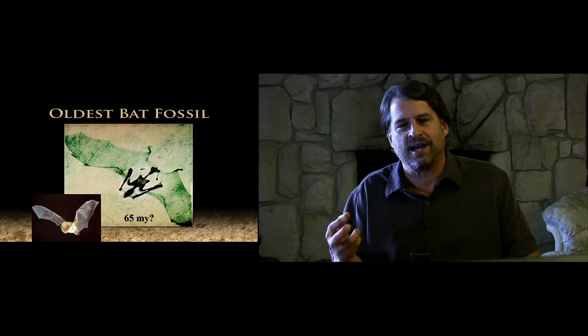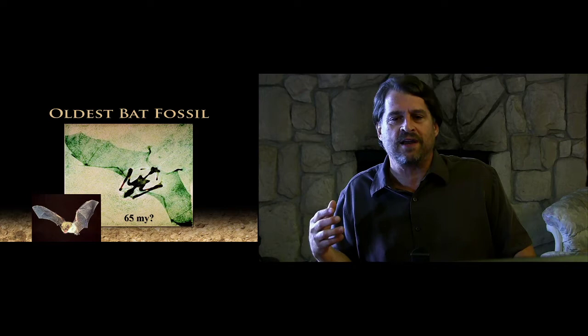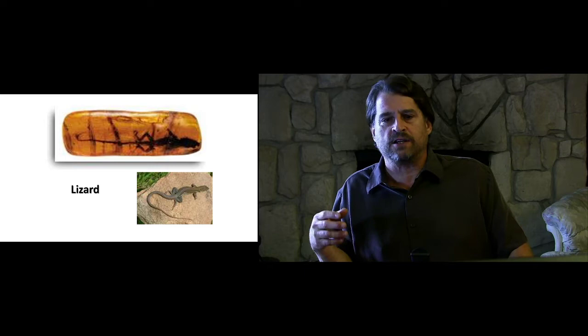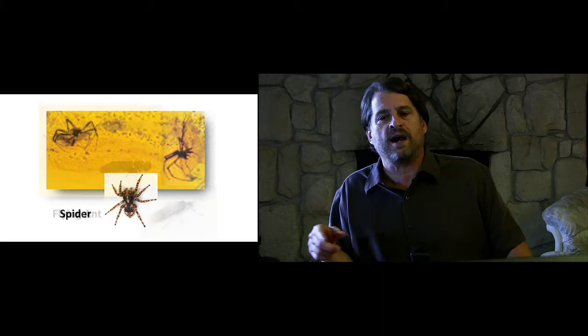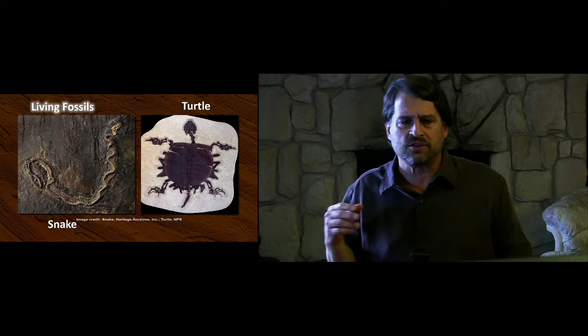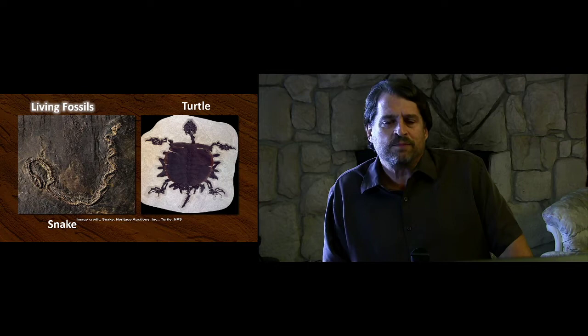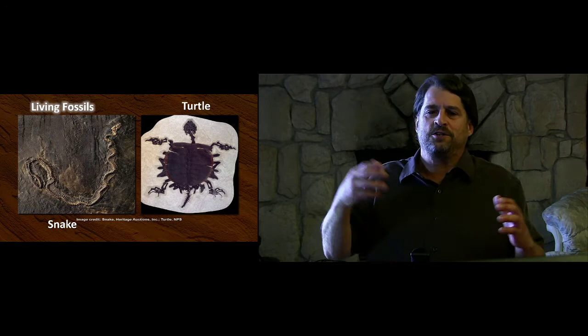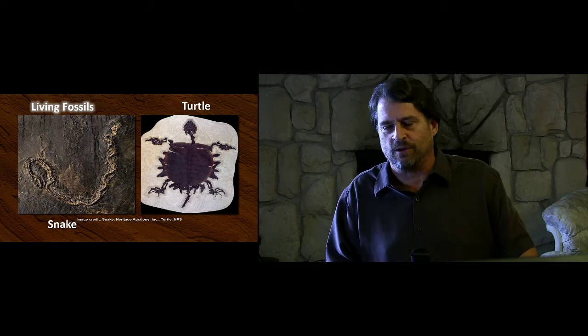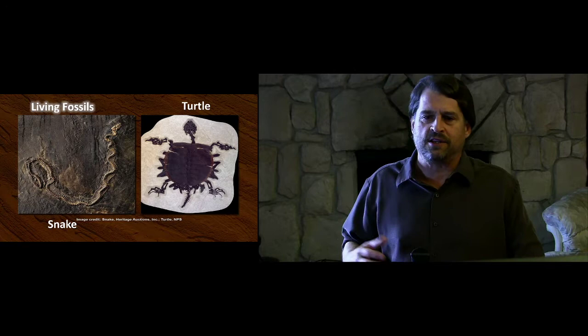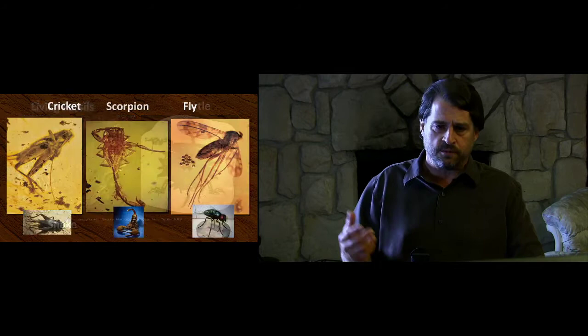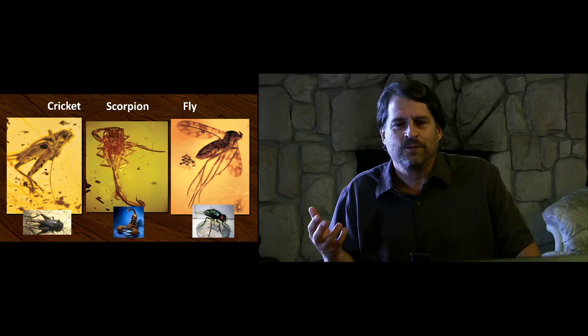The first time a bat appears in the fossil record it appears as a perfectly formed bat — no indication whatsoever of what evolved into the first bat. Flying creatures are highly specialized, yet the first time they appear in the fossil record they appear perfectly formed. Lizards, centipedes, spiders, flying ants, snakes, and turtles all appear identical in the fossil record to those alive today. Turtles especially create enormous problems — how did the turtle shell first evolve? Crickets, scorpions, and flies likewise appear basically identical in the fossil record.